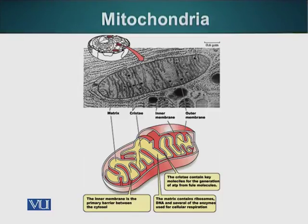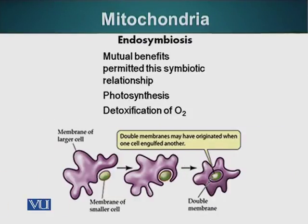It is thought that cells acquired mitochondria through a process called endosymbiosis. A couple of billion years back, when we only had cells, some cells had a mode of eating which required them to eat other smaller cells — predatory cells, for example. Scientists think that one such large cell engulfed a smaller cell like mitochondria and was unable to digest it.